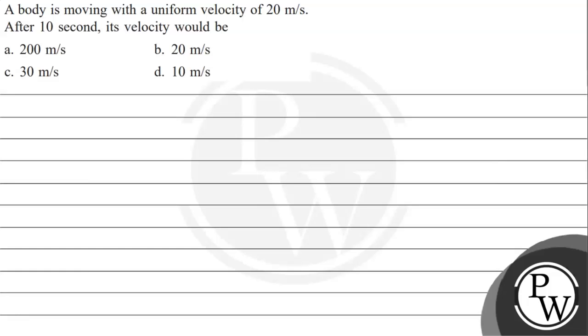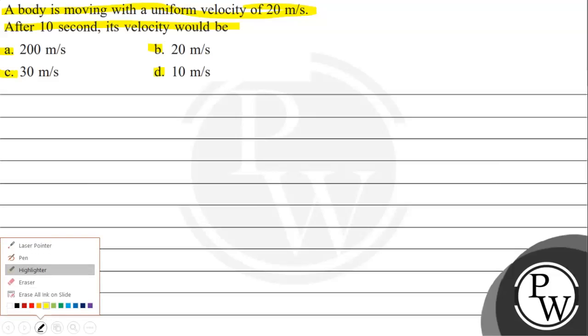Hello, let's take a given question. The question says: A body is moving with a uniform velocity of 20 meters per second. After 10 seconds, its velocity would be: Option A - 200 m/s, Option B - 20 m/s, Option C - 30 m/s, Option D - 10 m/s. So for this question, the key concept we need to understand is the concept of uniform velocity.